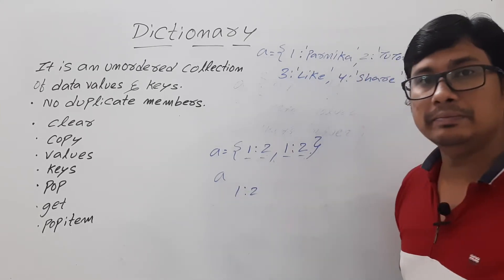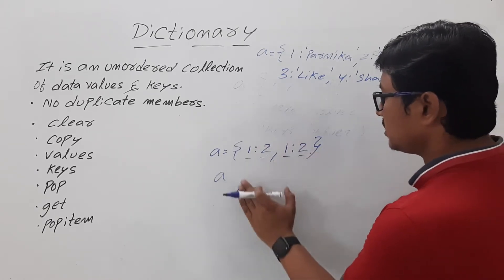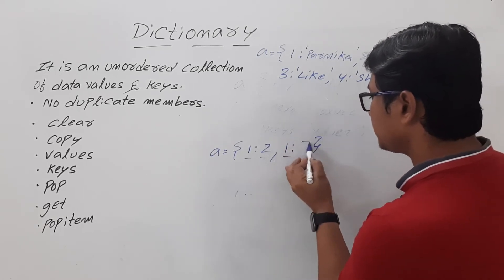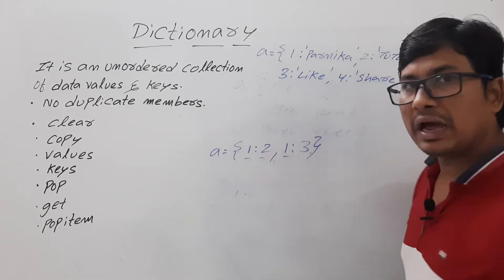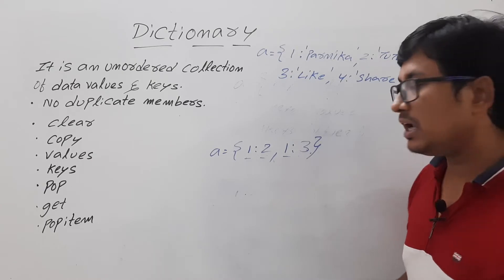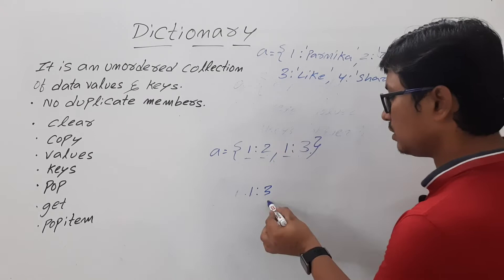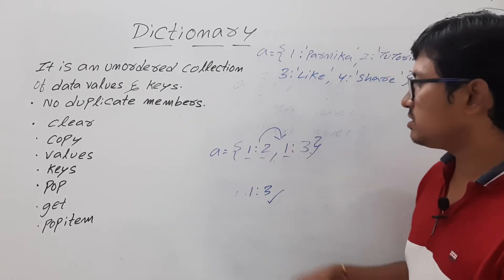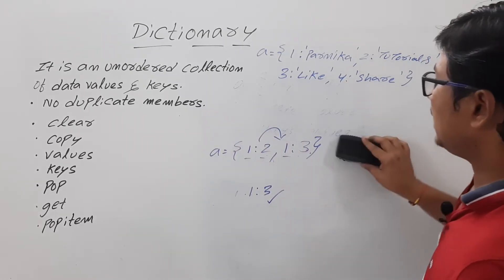Suppose you modify it slightly — for the same key 1 you first give value 2, then value 3. When you print, you will get key 1 with value 3 only, because it will be updated. The latest value overwrites the earlier one for the same key. This is the way you can create the dictionary.